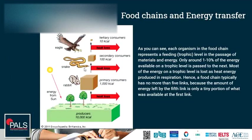Only around 10% of the energy available on a trophic level is passed to the next trophic level. Most of the energy on a trophic level is lost as heat energy produced in respiration and given out to the surroundings. Hence, a food chain typically has no more than five, maximum six links, because the amount of energy left by the fifth link is only a tiny portion of what was available at the first link. The available energy is rapidly decreasing from one trophic level to the next because on every trophic level, a lot of the energy is used by organisms just to stay alive for metabolism, and in the end the energy ends up as heat, which leaves the ecosystem.